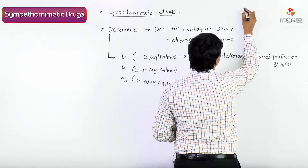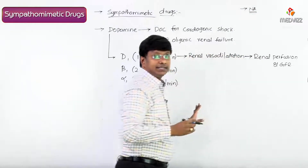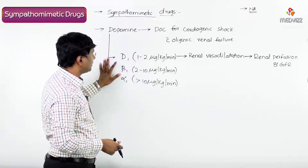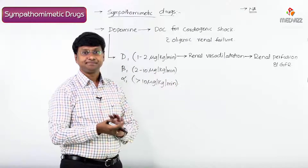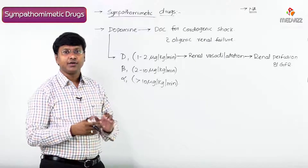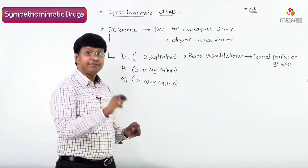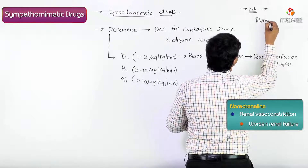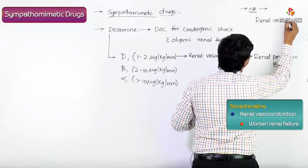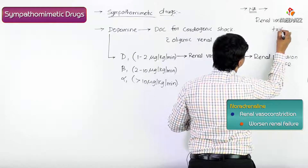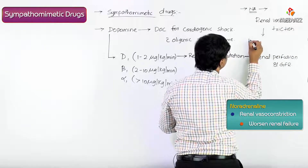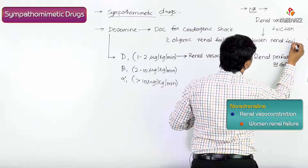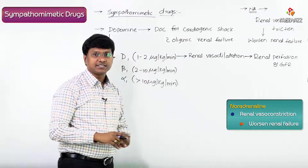In contrast to dopamine, noradrenaline has quite the opposite action on renal blood vessels. While dopamine acting on D1 receptors causes renal vasodilatation and maintains renal perfusion, noradrenaline causes renal vasoconstriction, which will further worsen renal failure.